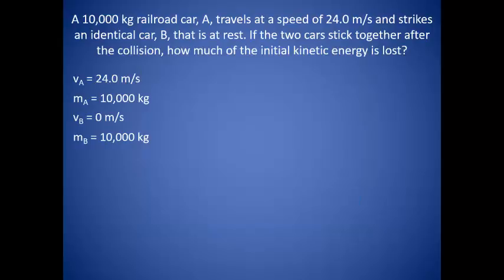As an example, let's say we have a 10,000-kilogram railroad car. It travels at a speed of 24 meters per second and strikes an identical car that is at rest. If the two cars stick together after the collision, how much of the initial kinetic energy is lost?